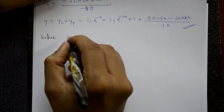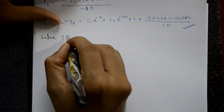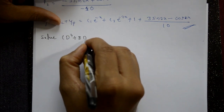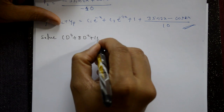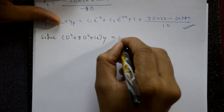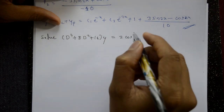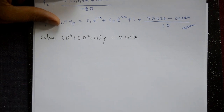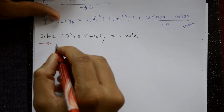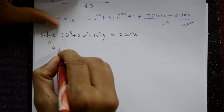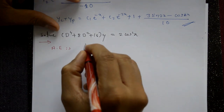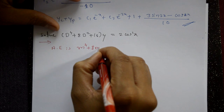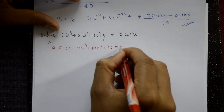Next example: Solve (D⁴ + 8D² + 16)y = 2cos²x. The auxiliary equation is m⁴ + 8m² + 16 = 0, which factors as (m² + 4)² = 0.